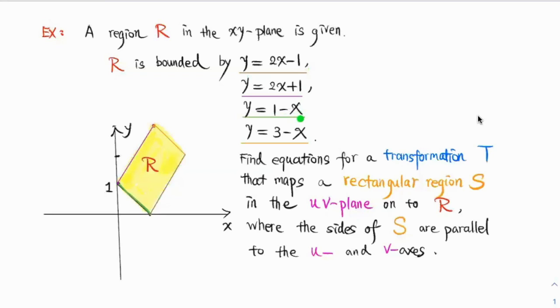Y equals 1 minus X is the green one over here. Y equals 3 minus X is this orange line segment over here. They intersect at four points, so these four line segments enclose region R.